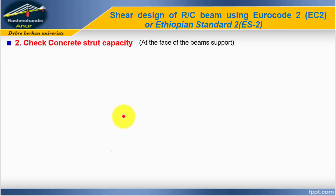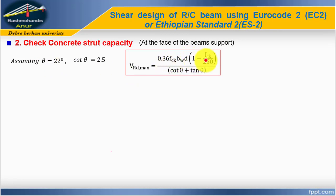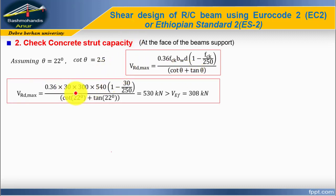Step number two: check the concrete strut capacity at the base of beam support. Assume theta equals 22 degrees, which corresponds to cot theta equal to 2.5. VRd,max for the minimum angle equals 0.36 × fck × bw × d × (1 − fck/250) / (cot theta + tan theta). Substituting all values, VRd,max equals 530 kN, which is greater than the design shear force at the face of the support.